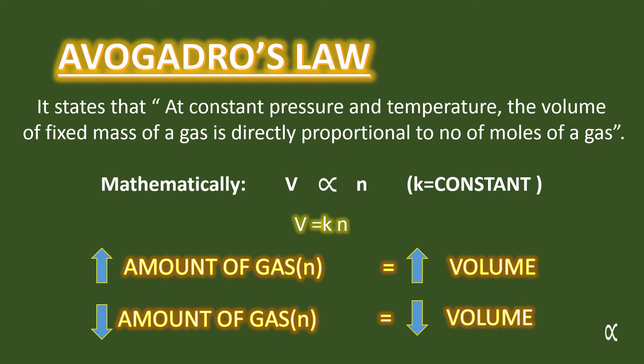We can write Avogadro's Law mathematically as: V is directly proportional to n, where k is a constant. Here, V is the volume of a gas, n is the amount of gas or number of moles of a gas, and k is constant pressure and temperature. By rearranging this, we can write V = kn. This is called the Avogadro's equation.